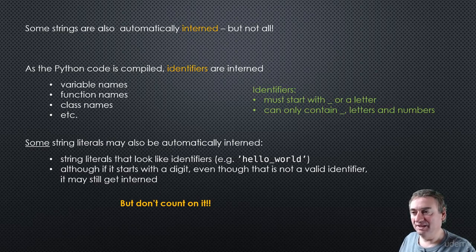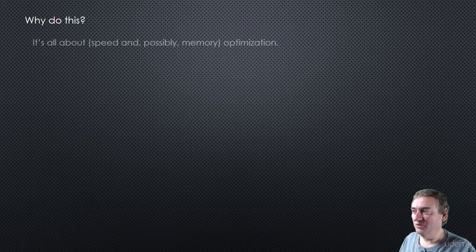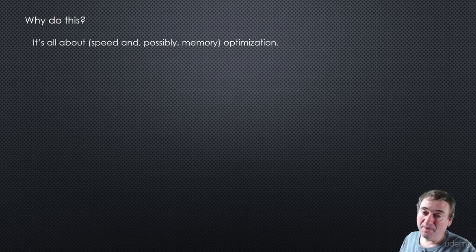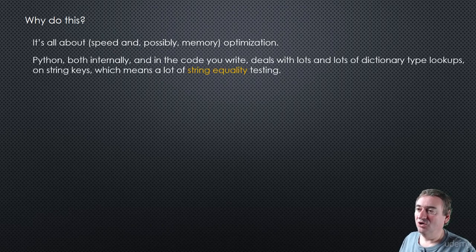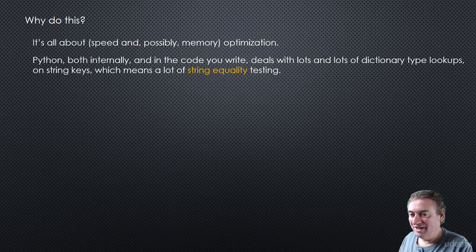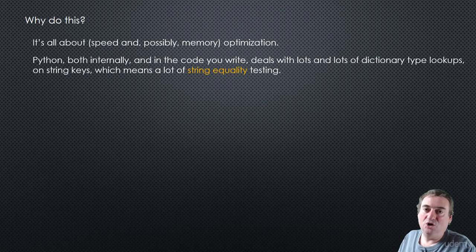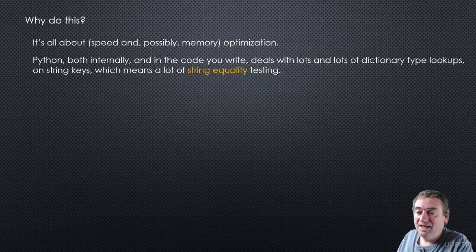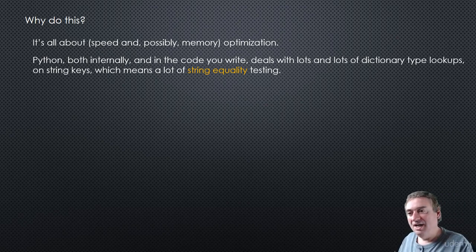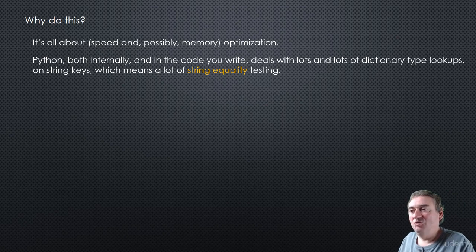Python is interning those things for a reason — it's all about optimization, really about speed optimization and possibly memory optimization. As your Python code is running, Python needs to look up your identifiers and variable names. If you reference a variable and say 'print A', it goes into a dictionary and looks up A to find the object. So there's a lot of string comparisons and string equality testing that has to occur.